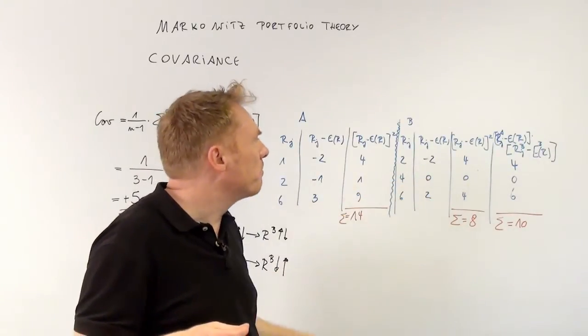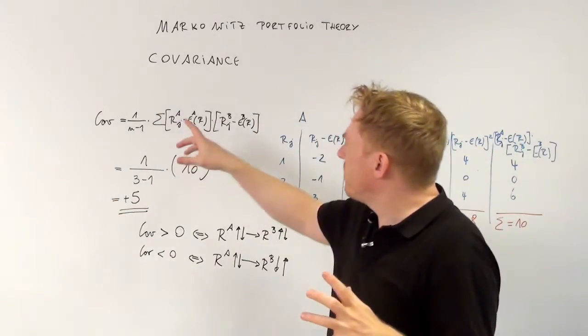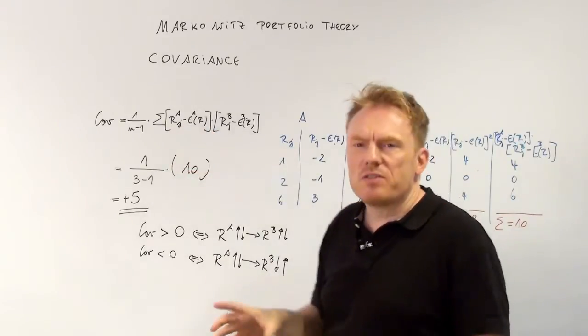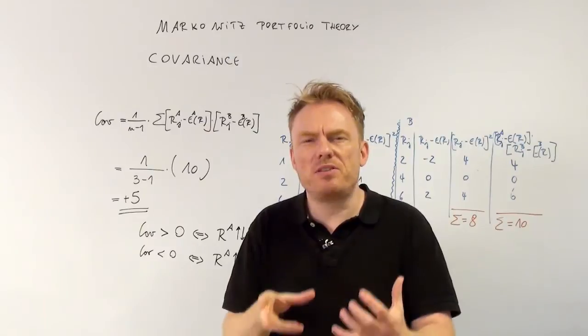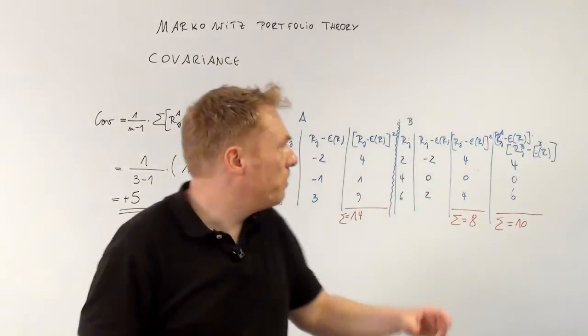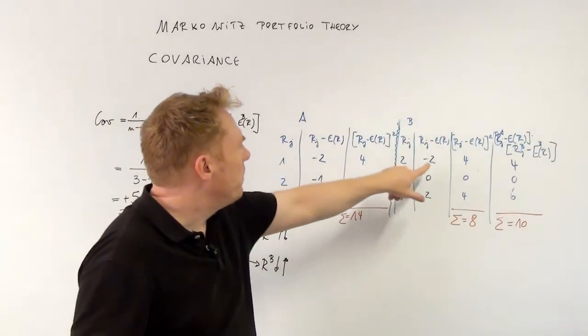6 minus 4 is equal to 2. And that's important because the formula tells us we need to multiply the deviations. So that's what we do. We need to multiply this number with this number. Those are the deviations, those are the differences.